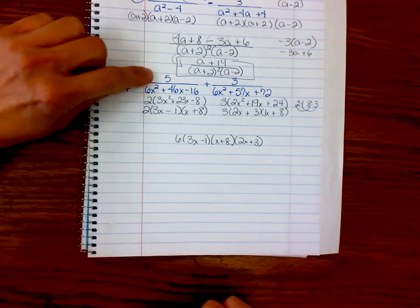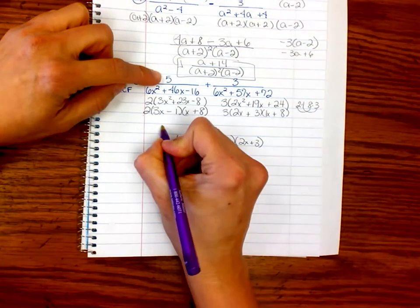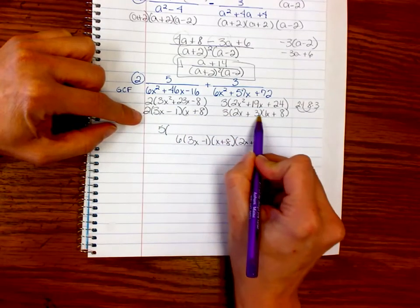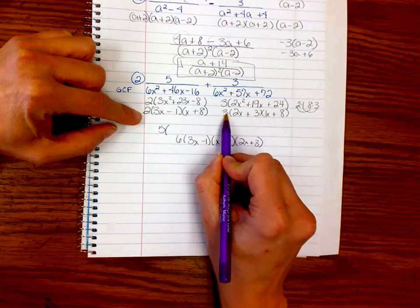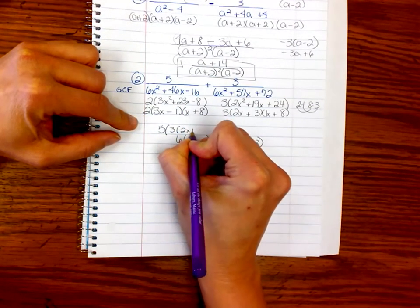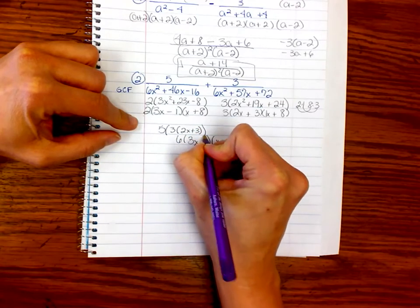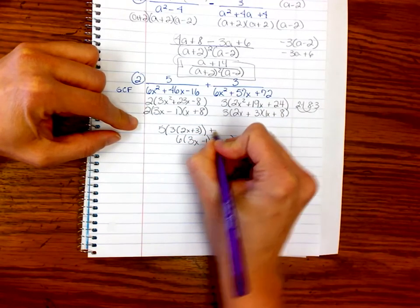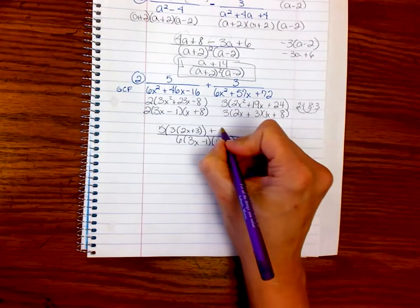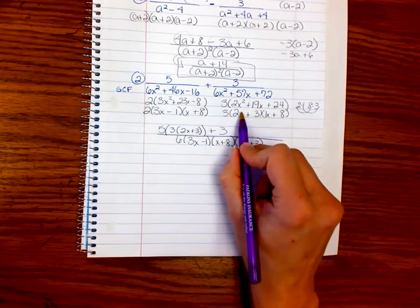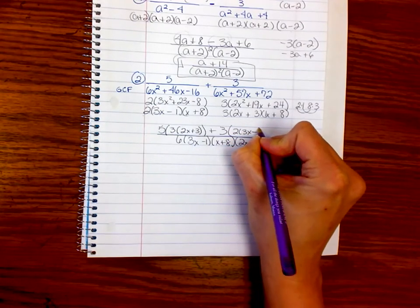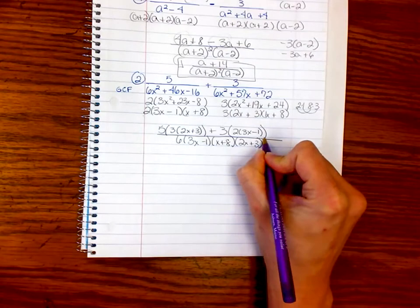So, I have the x plus 8 in common. I use the common factor once. And then every other factor has to be used. Now, that means I have to multiply this 5 by the factors that don't exist here, which are these two. So I'll put it like this. 5 times 2x plus 3. We'll go slow here. And then there's a plus sign. It's our fraction line. And then I'm going to have to multiply this 3 by the factors that don't exist here, which are 3x minus 1. I'm sorry, minus 1.